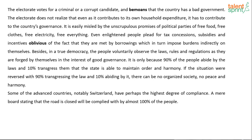Passage continued: 'The electorate votes for a criminal or corrupt candidate and bemoans that the country has a bad government. It is easily misled by unscrupulous promises of political parties for free food, free clothes, free electricity. Even enlightened people plead for tax concessions, subsidies, and incentives, oblivious of the fact that these are met by borrowing which imposes burden indirectly on themselves. It is only because 90% abide by laws and 10% transgress that the state maintains order.'